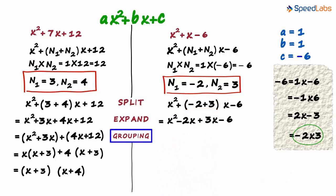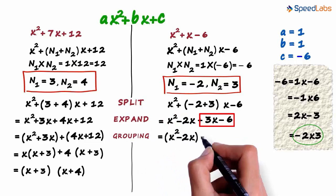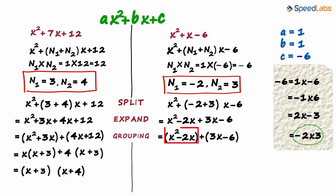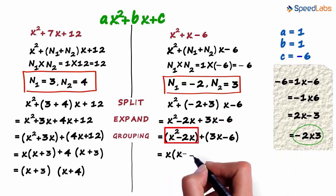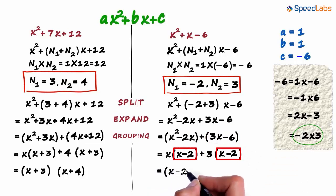The next step is grouping. The first group we formed is x squared minus 2x, and the second group is 3x minus 6. The first group can be written as x multiplied by (x minus 2). And the second group can be written as 3 multiplied by (x minus 2). The binomial x minus 2 is common to both terms. So we reduce the expression to (x minus 2) multiplied by (x plus 3).